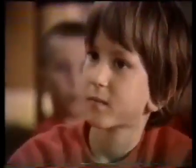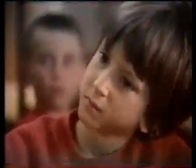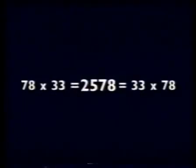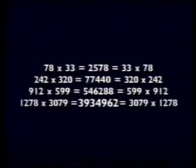We can turn this round in our mind's eye and see that this must be the same as B rows and A columns. No matter how enormously big the numbers A and B, we know intuitively that A times B will always equal B times A.